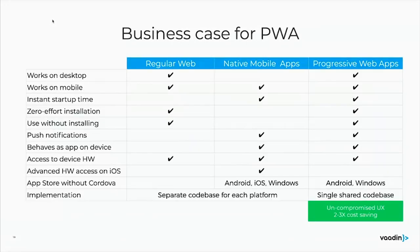To summarize: when comparing regular web applications, native mobile applications, and progressive web apps, the main benefit of PWAs and regular web apps is that you write your codebase once and run it on any platform. Progressive web apps additionally bring most of the benefits of native mobile applications — essentially the best of both worlds. The current gap is that while Android and Windows App Stores support PWAs, the iOS App Store does not yet support distributing them directly, so you still need to wrap with Cordova for iOS distribution. Hopefully that changes, but that's the situation today.